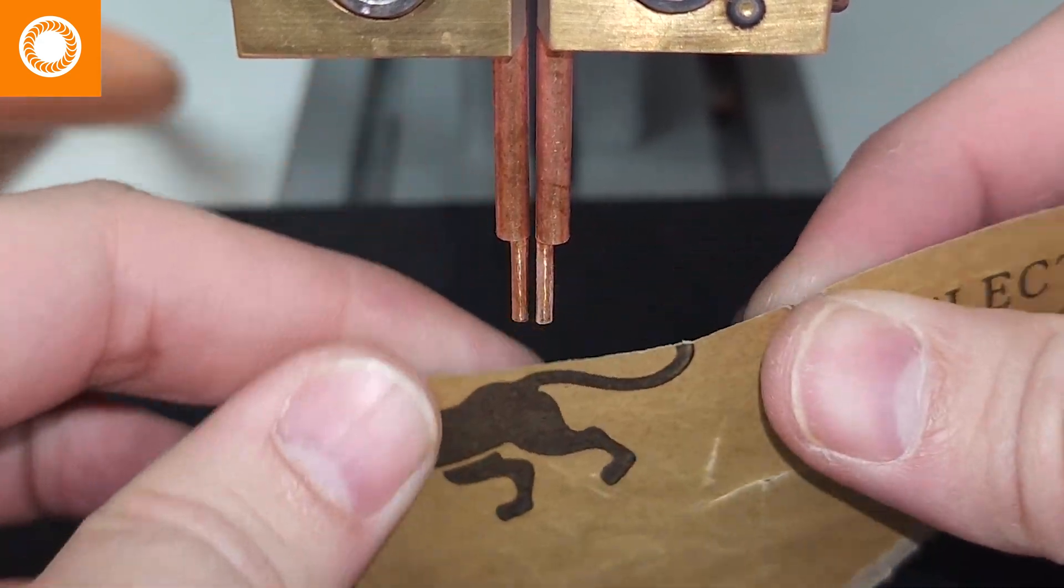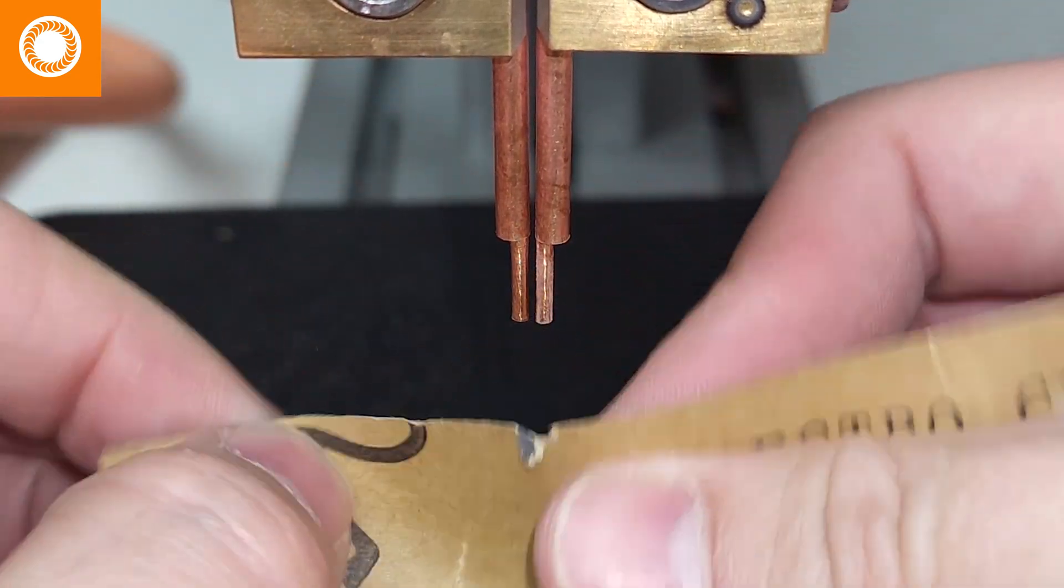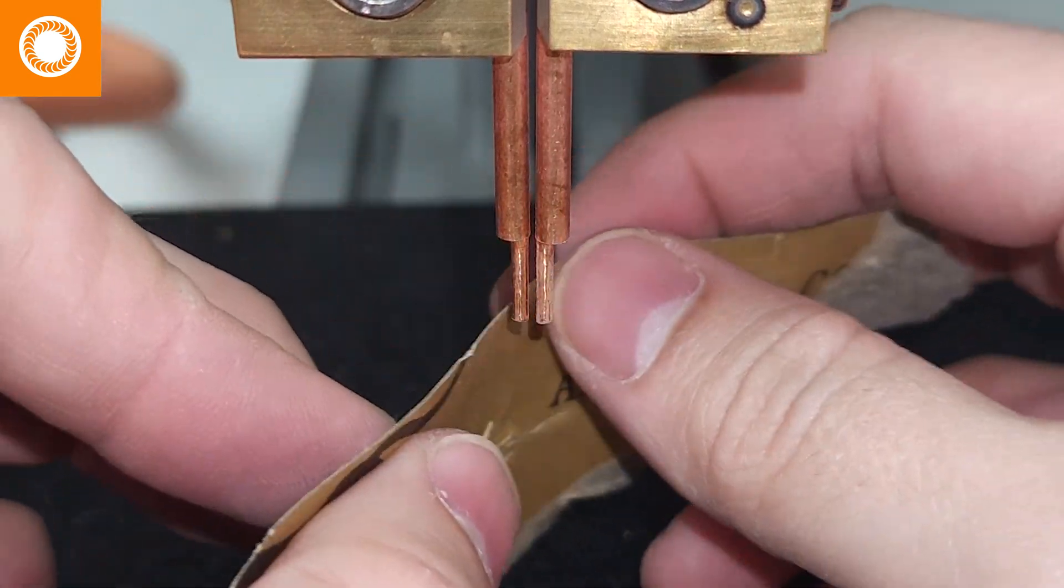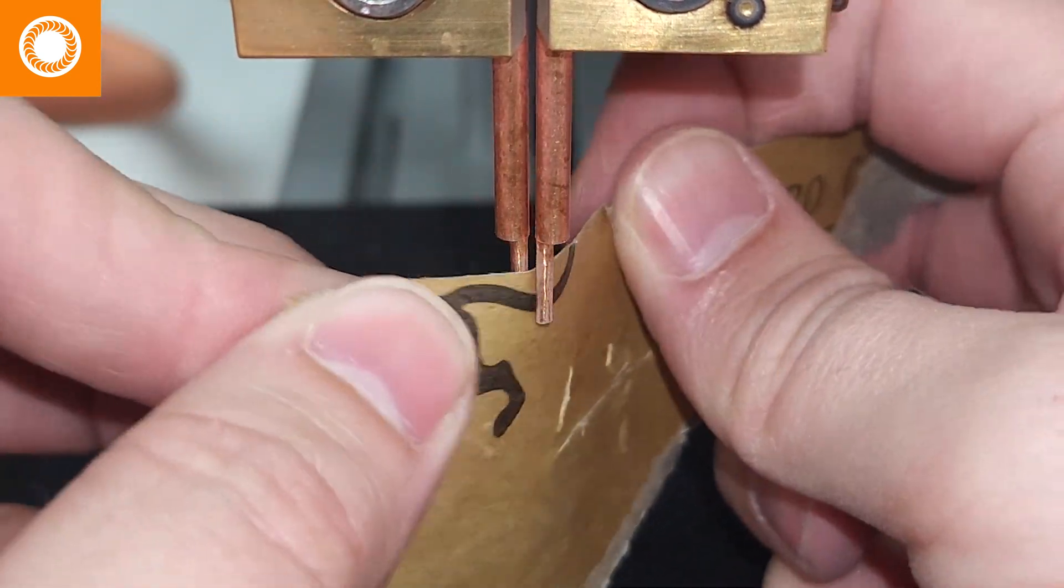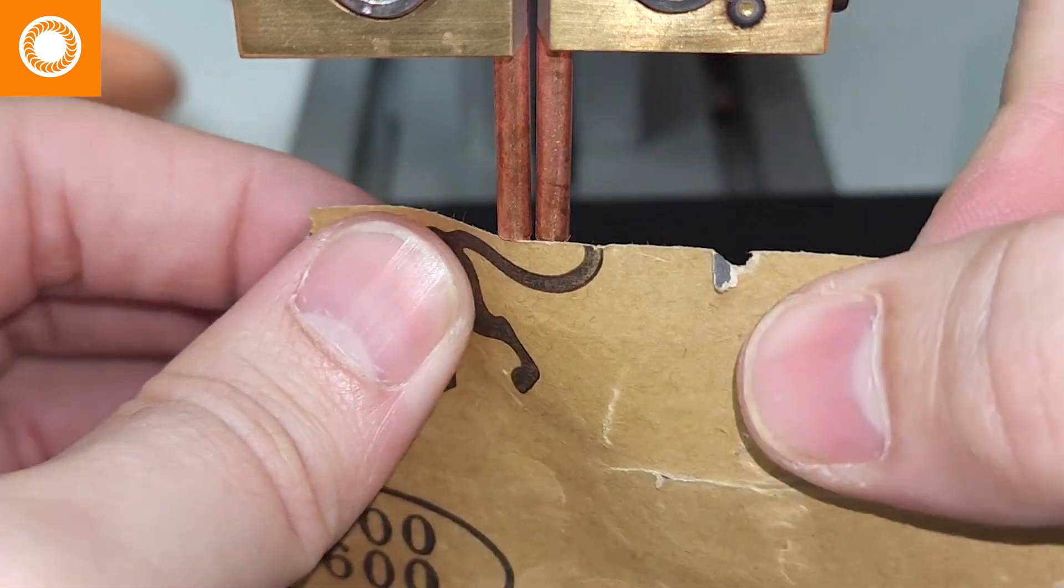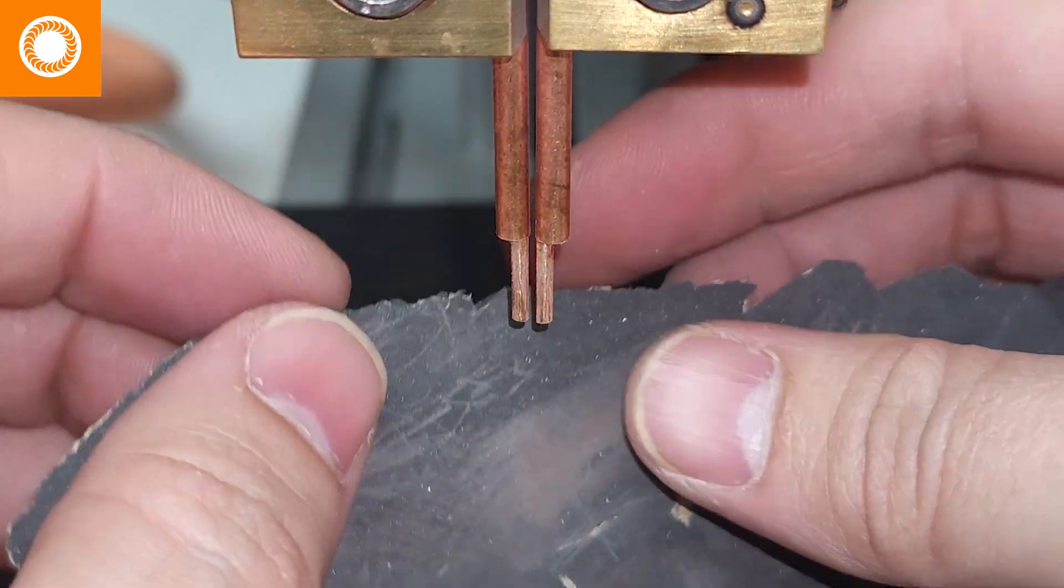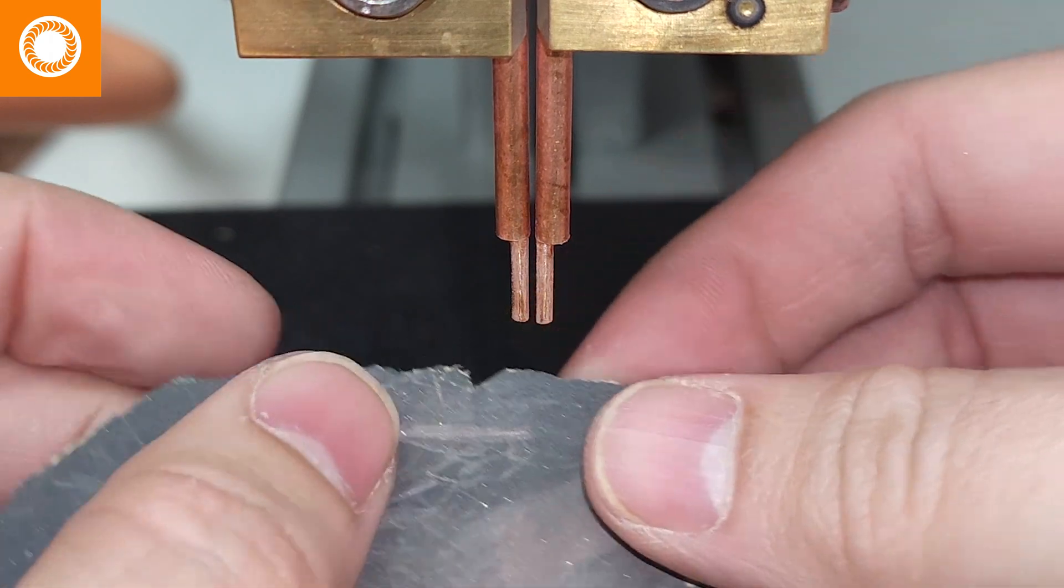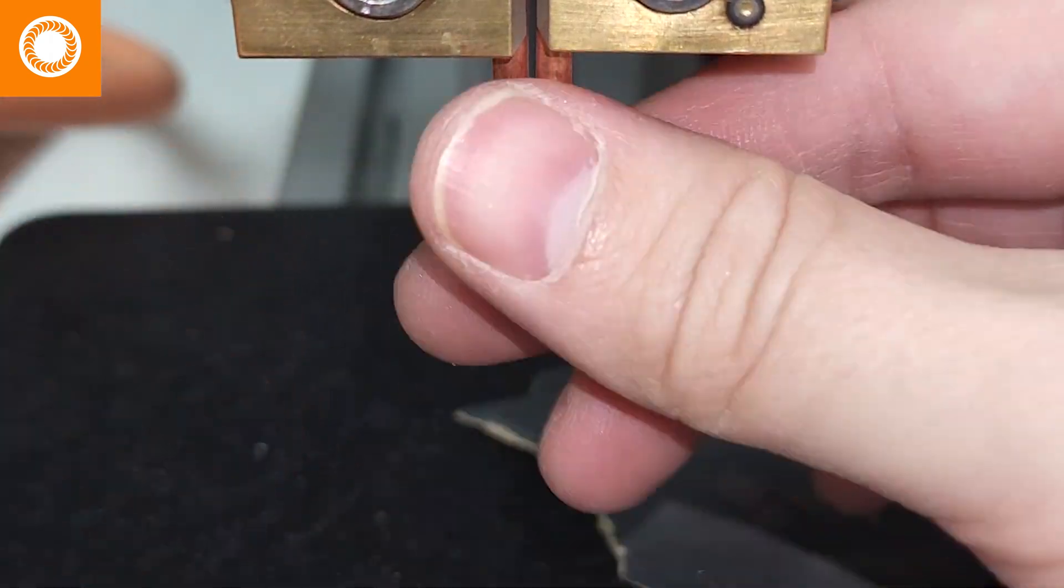I'll just kind of take any burrs off. I don't need to do this for this because there are brand new electrodes, but sometimes you'll need to follow these steps to remove any burrs that may have occurred over the course of welding it.